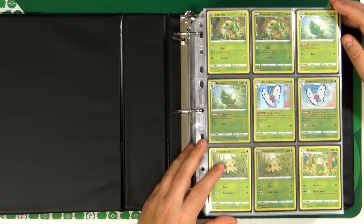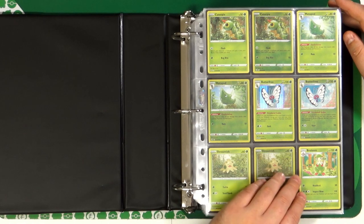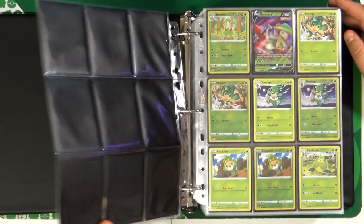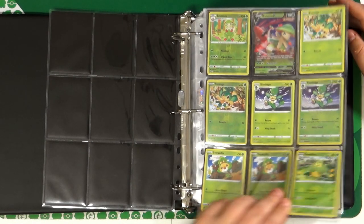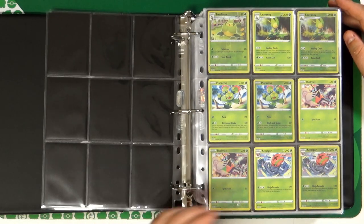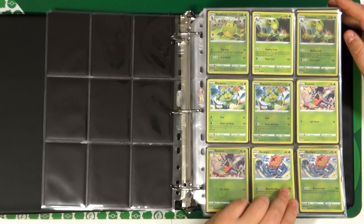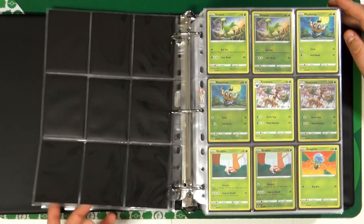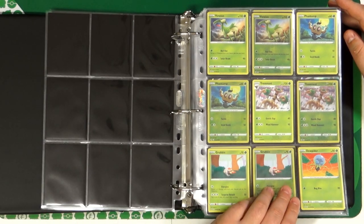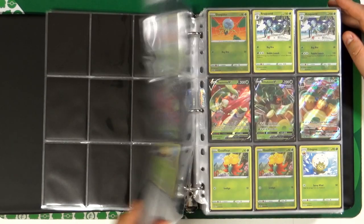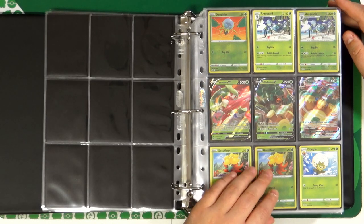We begin as always with the Grass type Pokemon. I will not go through each single card but only through the most interesting of this set. We have Virizion, Phantump, Trevenant, some really good artwork.